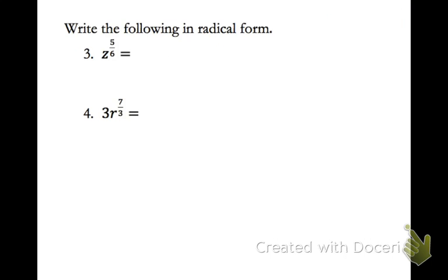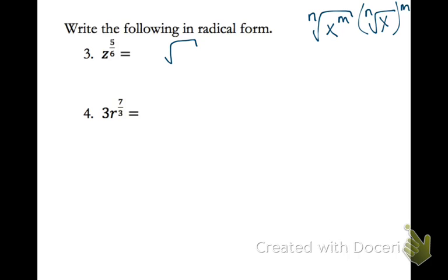Next we're going to take terms in exponential form and write them in radical form. Radical form has the n in the root, your base, and then your m as an exponent — or with your m outside the radical. Either one works. So for number 3, we're going to start with our radical. Our base here is z, so z goes on the inside. This is m over n, so n goes in the root — put a 6 there — and then your m is the exponent on the z.